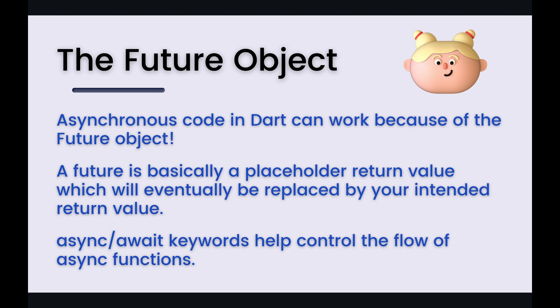There are two additional keywords that are important to know: async and await. We're going to see examples of both of these keywords in the code coming up shortly. Async and await are keywords that help control the flow of asynchronous functions. Let's hop on over to the code and learn about all of these things.